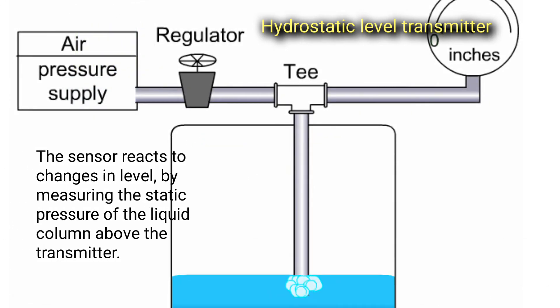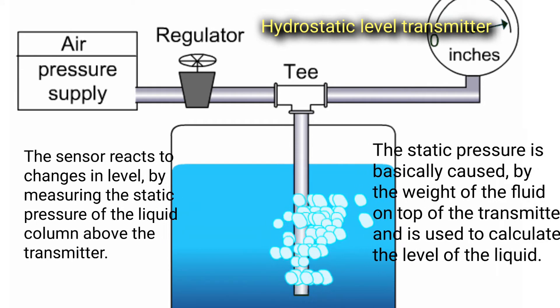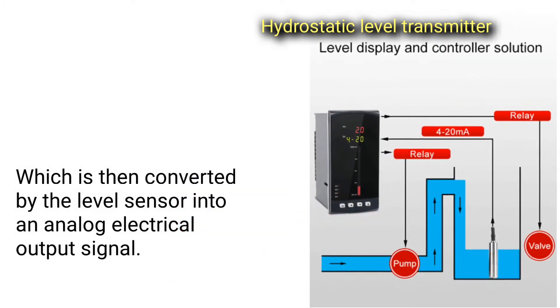The sensor reacts to changes in level by measuring the static pressure of the liquid column above the transmitter. The static pressure is basically caused by the weight of the fluid on top of the transmitter and is used to calculate the level of the liquid, which is then converted by the level sensor into an analog electrical output signal.